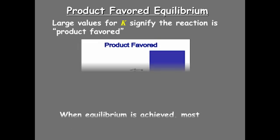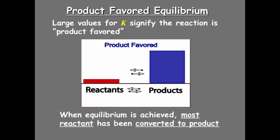A large value for K means that reaction's going really far forward. So most of the reactant then gets converted to products, as you see here in the diagram, reactants being red and products being blue.